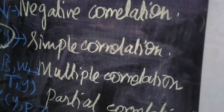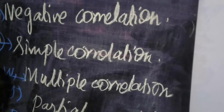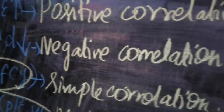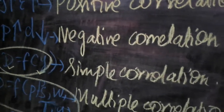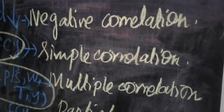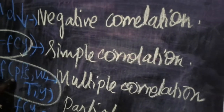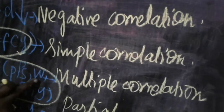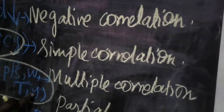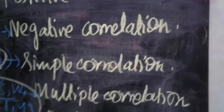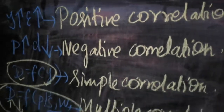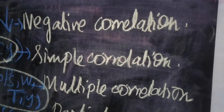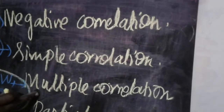Multiple correlation means simultaneously we concentrate on three or more variables. The demand function formula is: D = f(Y, P, Ps, W, T), where D means demand, P means price of the product, Ps means price of substitute product, W means wealth of the consumer, T means taste of the consumer, and Y means income of the consumer. Each and every factor plays a very important role in the increase or decrease of demand — we call that multiple correlation.